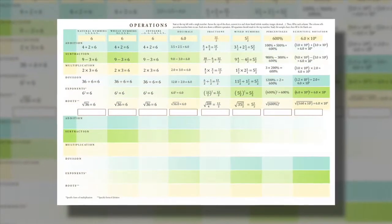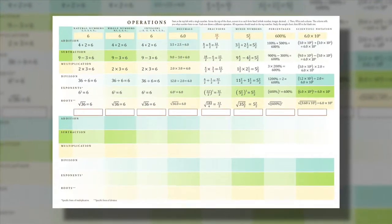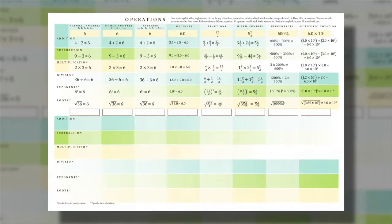The third section charts operations using math terms that students need to master. The chart shows the number 6 written as a whole number, integer, decimal, fraction, and so on.